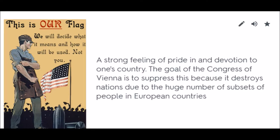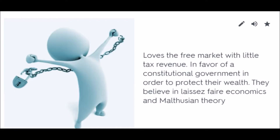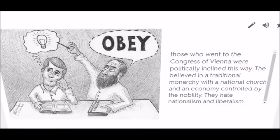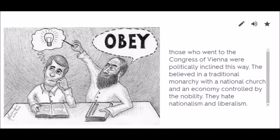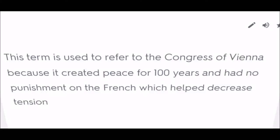Liberalism: Loves a free market with little tax revenue in favor of a constitutional government in order to protect wealth. They believe in laissez-faire economics and Malthusian theory. Conservatism: Those who went to the Congress of Vienna were politically inclined this way. They believed in a traditional monarchy with a national church and an economy controlled by the nobility. They hate nationalism and liberalism. Concert of Europe: This term refers to the Congress of Vienna because it created peace for 100 years and had no punishment on the French, which helped decrease tension.